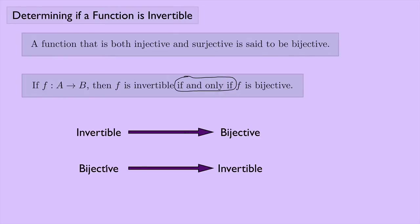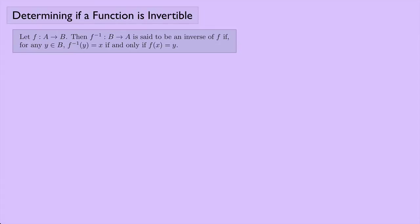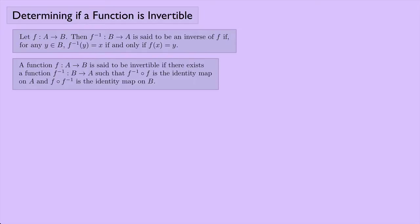Let's try and prove this statement with a sketch of the proof first. To help, I'll display a few things. If we have a function from set A to set B, then F inverse will go from B to A, and that's an inverse if for any element Y in set B, F inverse of Y equals X if and only if F of X equals Y. A function F is invertible if there exists F inverse from B to A such that F inverse composed with F is the identity map on A, and F composed with F inverse is the identity map on B.